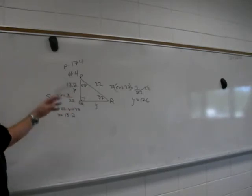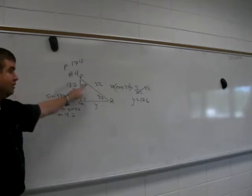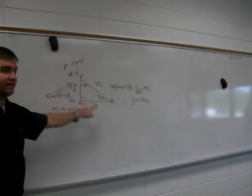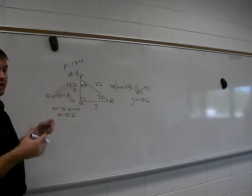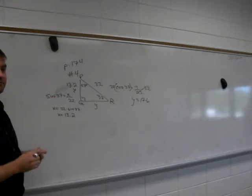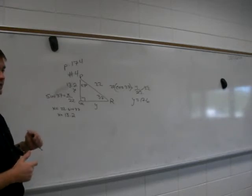So there we've solved the right triangle. We figured out this angle. We figured out this side. And we figured out this side. That's all the information. We have all three sides and all three angles. That's everything we could find. Any questions on solving a right triangle?